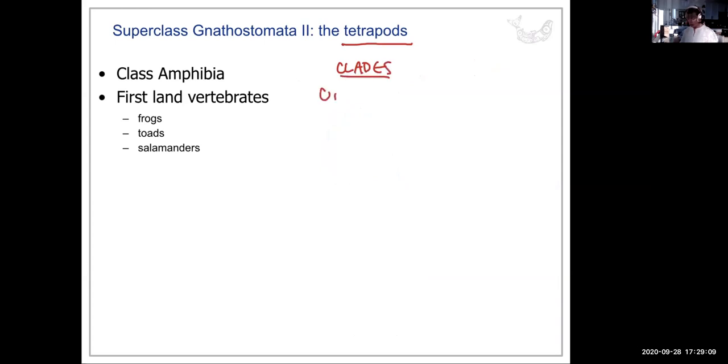They're named a little bit differently. Urodela - that's the tailed ones, the salamanders and newts. The Anura - those are tailless, your frogs and toads.